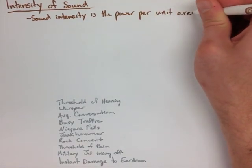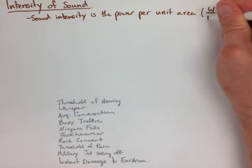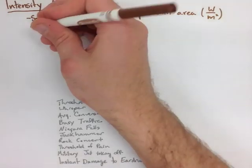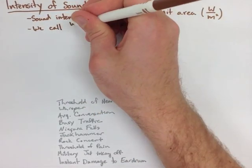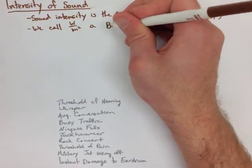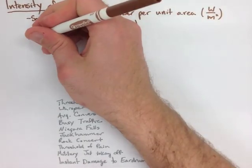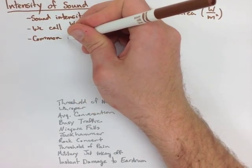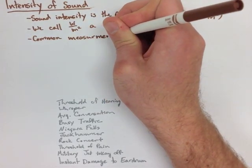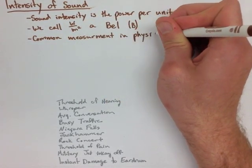You don't really hear this ever though when we're talking about sound intensity. What you actually hear is what we call a bell. So we have watts per meter squared are bells, but the common measurement that we use in physics is actually a decibel. So 10 decibels is equal to 1 bell, and that's what we normally use.